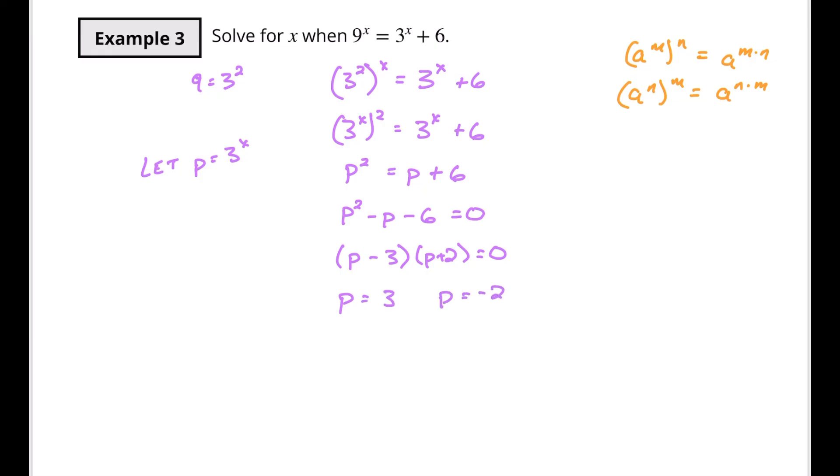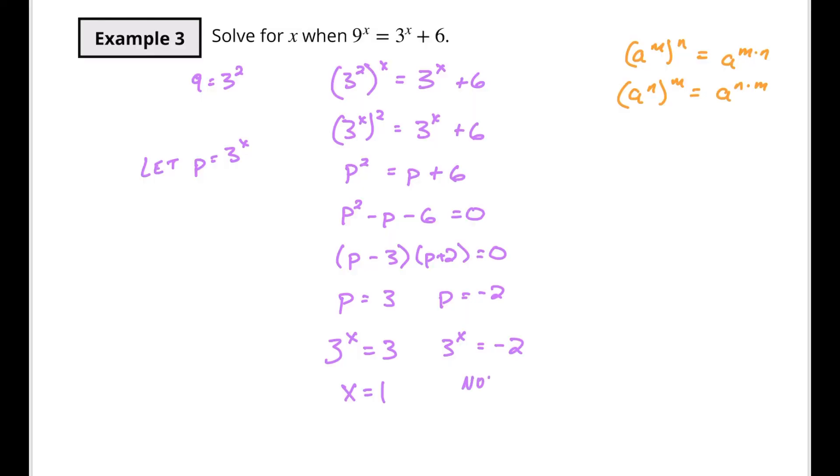So that means that p has to equal 3 or p has to equal negative 2. But remember, we're not talking about p. We're talking about 3 to the x. So 3 to the x is equal to 3 or 3 to the x is equal to negative 2. Well, 3 to the x equals 3. Well, of course here, x is going to equal 1. That's one of our solutions. And 3 to what power is going to give us negative 2? Nothing. Nothing's going to give you a negative 2 result. So this is not possible over here. And you're going to have only one solution where x equals 1.